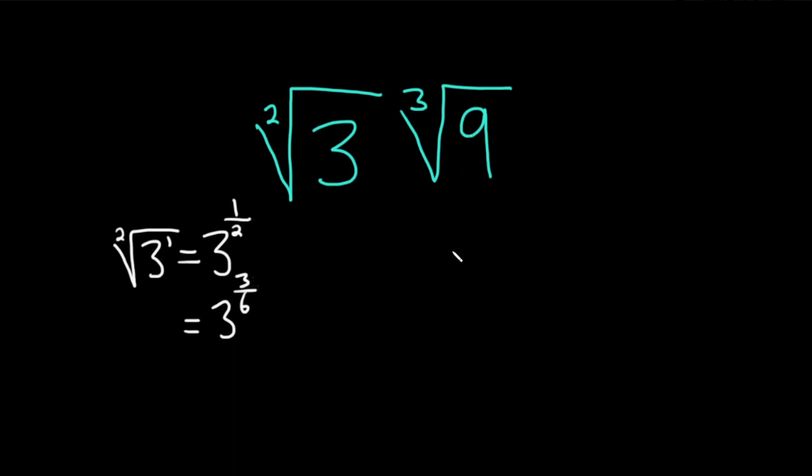Likewise, the cube root of nine is nine. There's a one here and it's one over three. And basically this is the same thing as two over six. We can multiply one over three by two over two to get two over six.